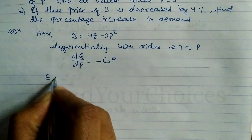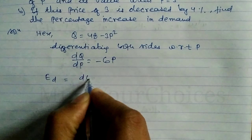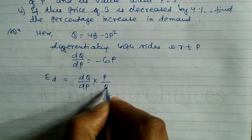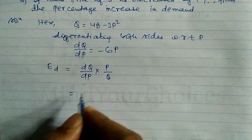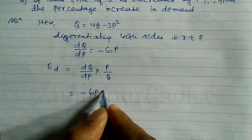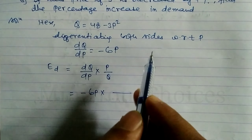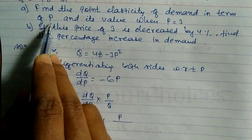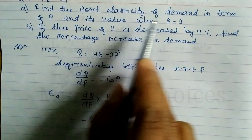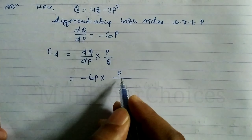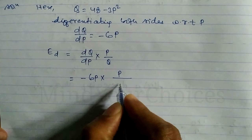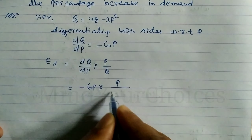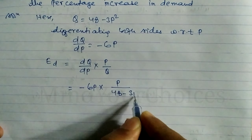Point elasticity of demand is given by: Ed = dQ/dp × p/q. Here dQ/dp = -6p, multiplied by p. Since we need the answer in terms of p, we keep p as is and substitute q with its value: 48 - 3p².